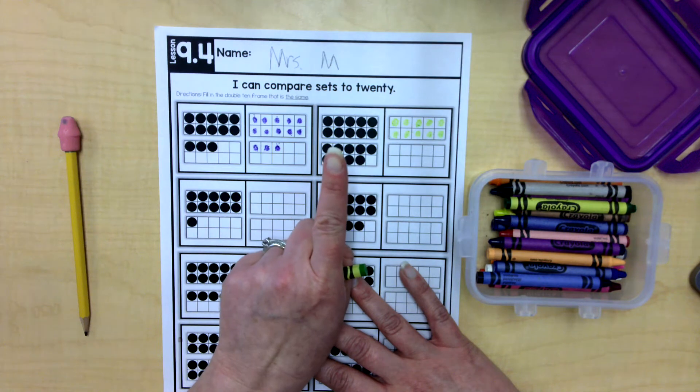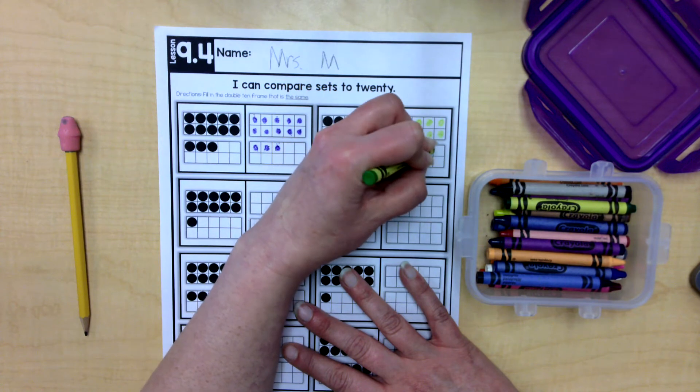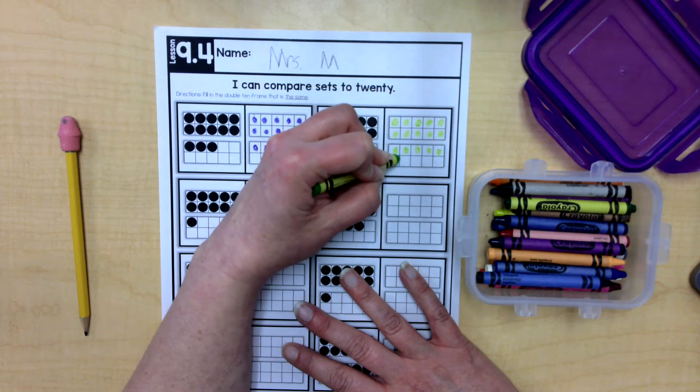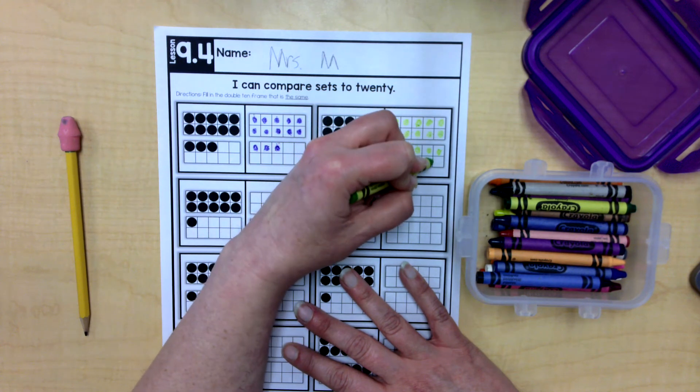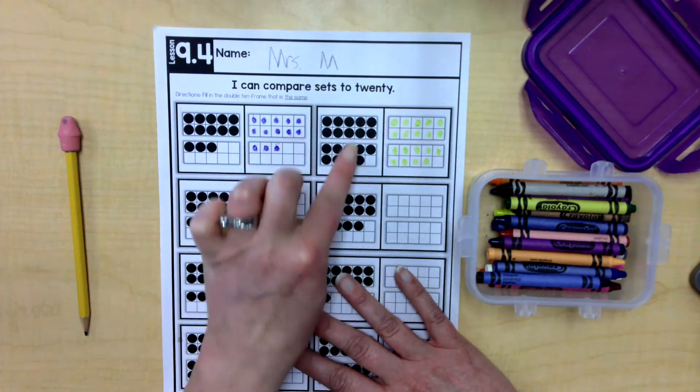That's 19. 10. One, two, three, four, five, six, seven, eight, nine, and stop. 10 and nine, 19.